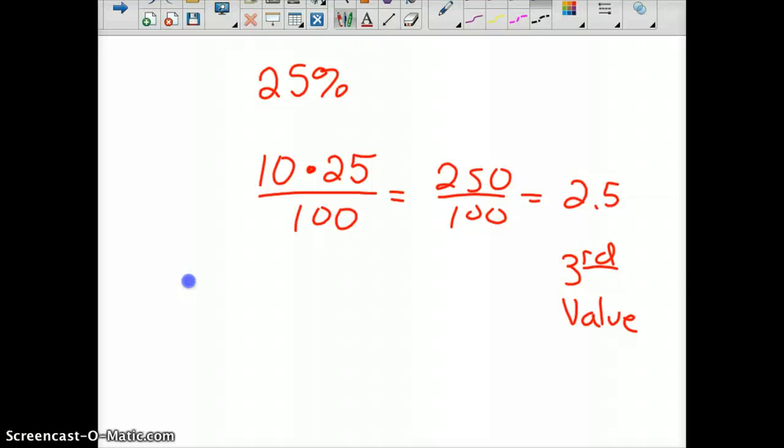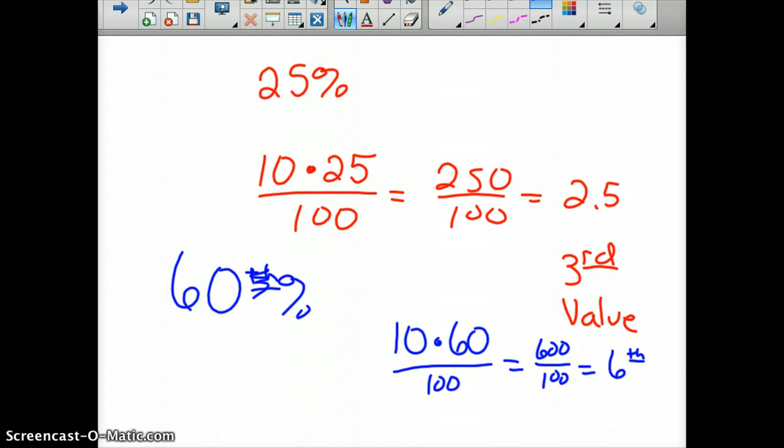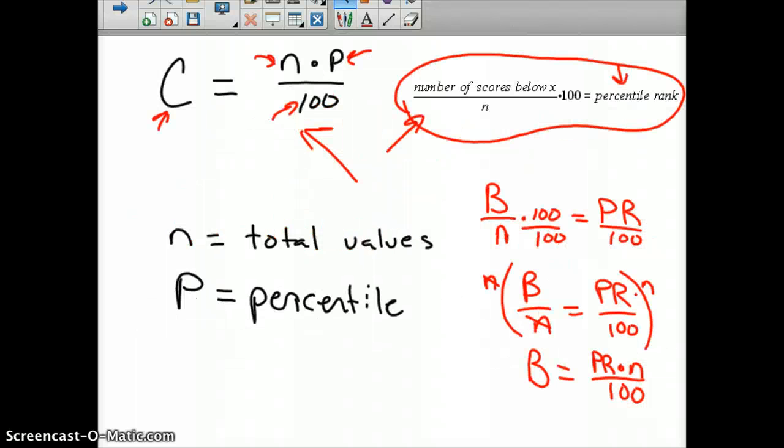Okay, let's say we wanted to know the 60th percentile. So, 60th percentile. Same thing, there's 10 scores in our data, times 60 for the percentile, divided by 100, which would be 600 over 100, which is equal to the 6th value. So, we go back over here, to our data.